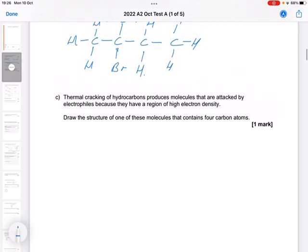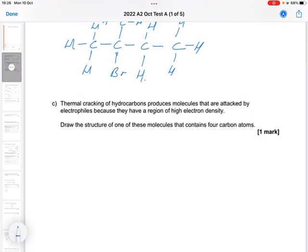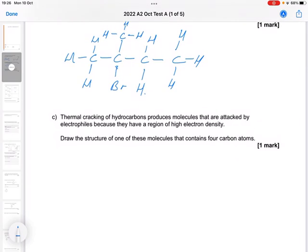Part C, thermal cracking of hydrocarbons produces molecules that are attacked by electrophiles, because they have a region of high electron density. Draw the structure of one of these molecules that contains four carbons. So the cracking of a hydrocarbon. So region of high electron density. This is kind of telling you that we've got a carbon-carbon double bond.